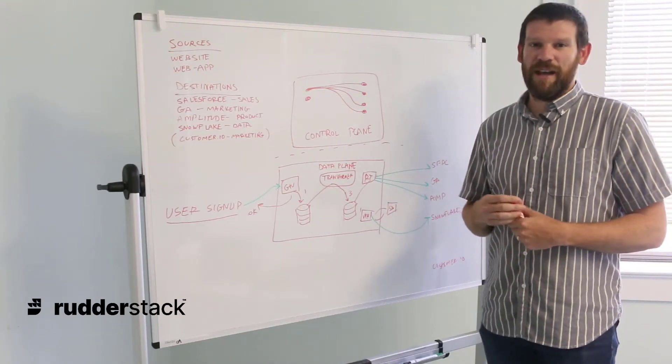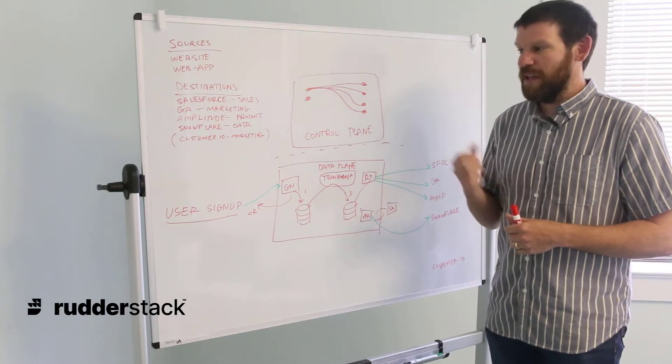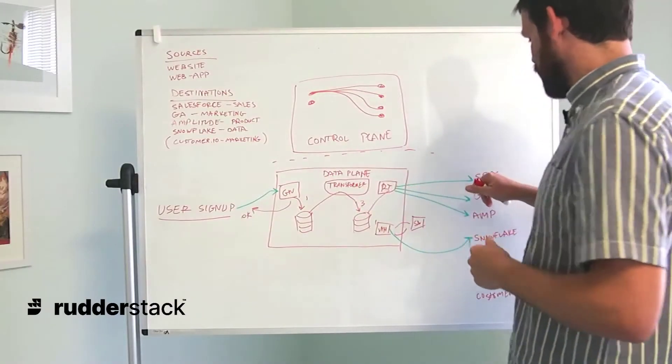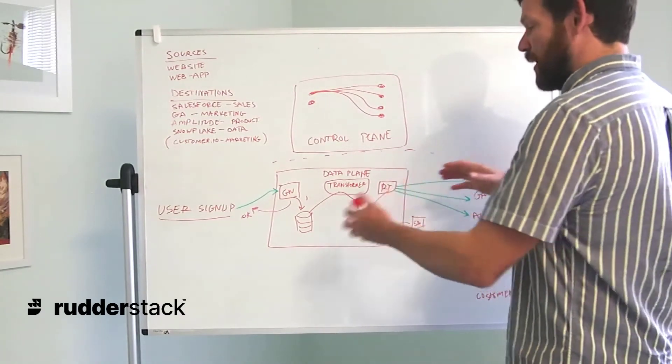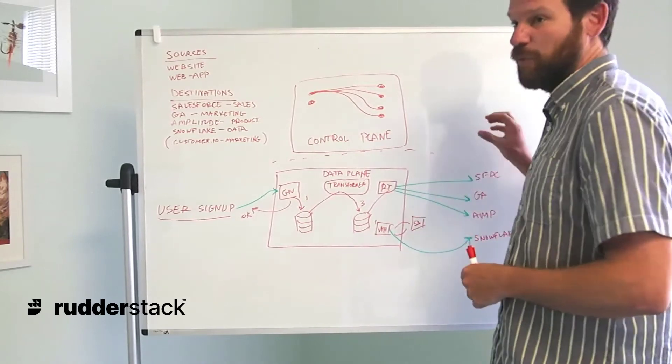That's going to allow us to do a number of things. We can use a third-party API to enrich that event data. We can whitelist certain traits so that, for example, for Salesforce, if we're collecting custom fields on this event that don't exist in Salesforce, the event to Salesforce will fail because that custom field doesn't exist.